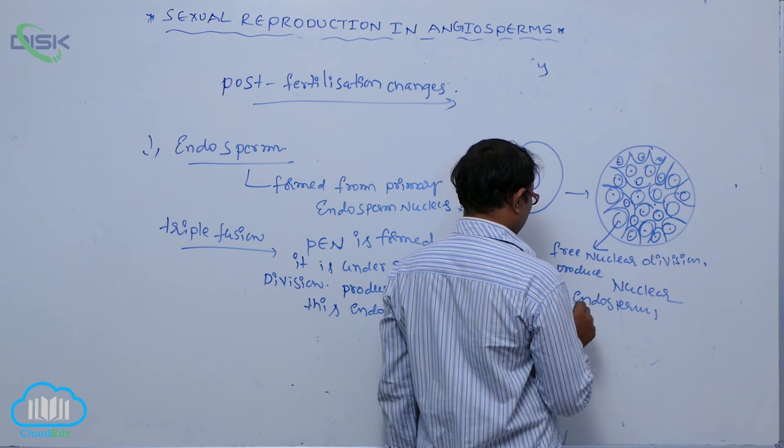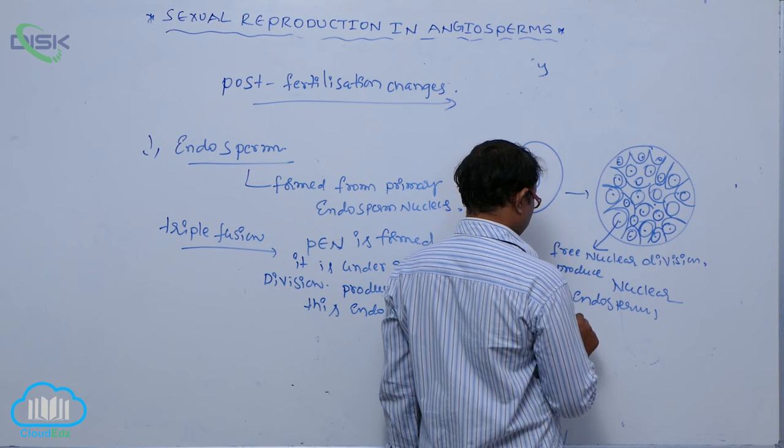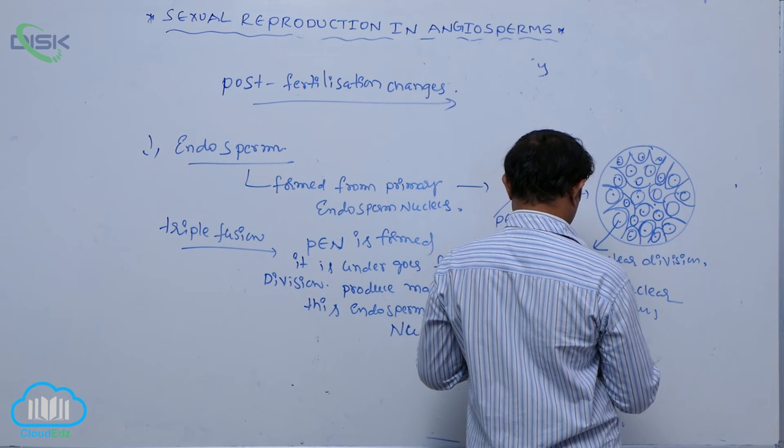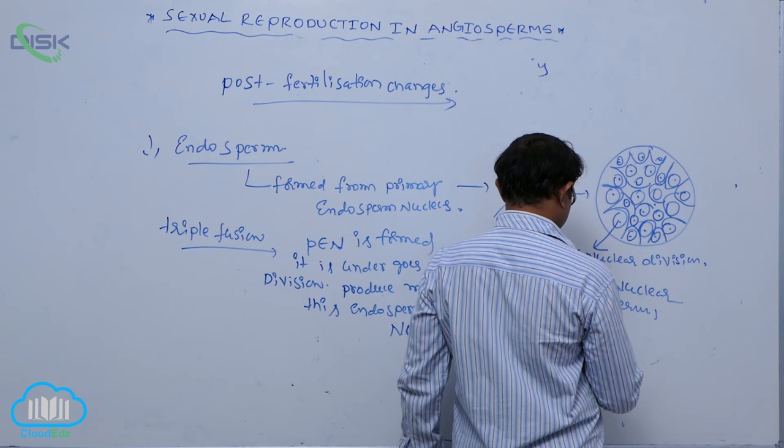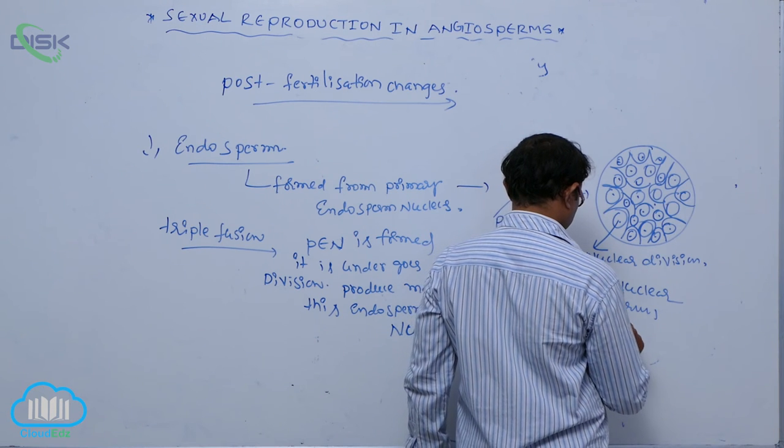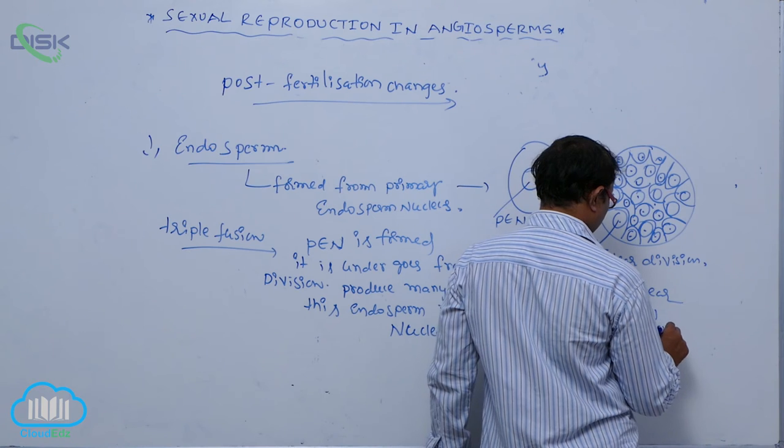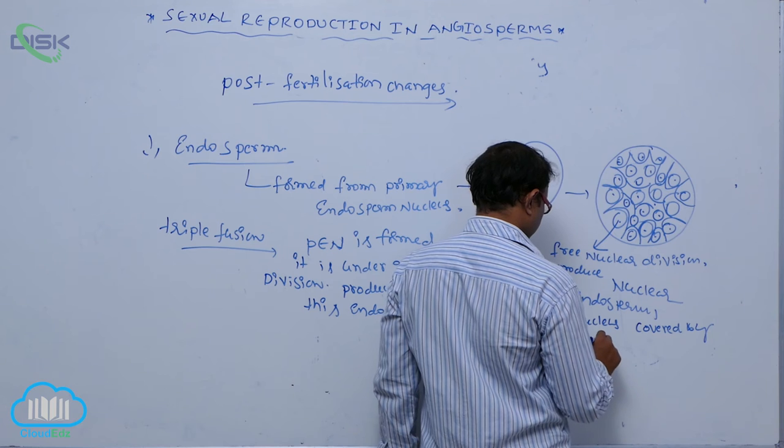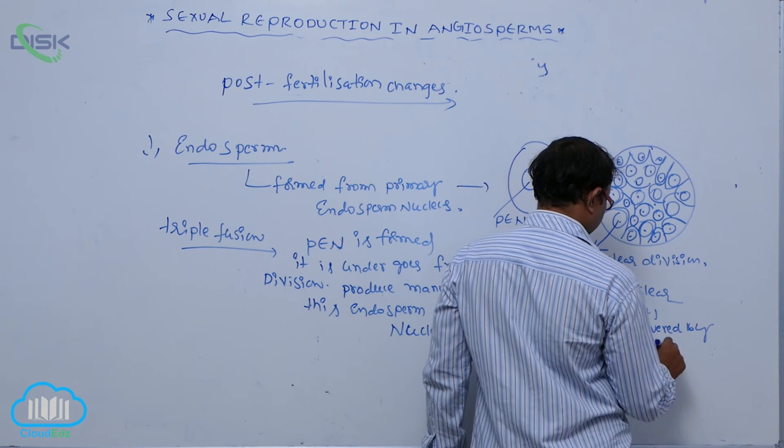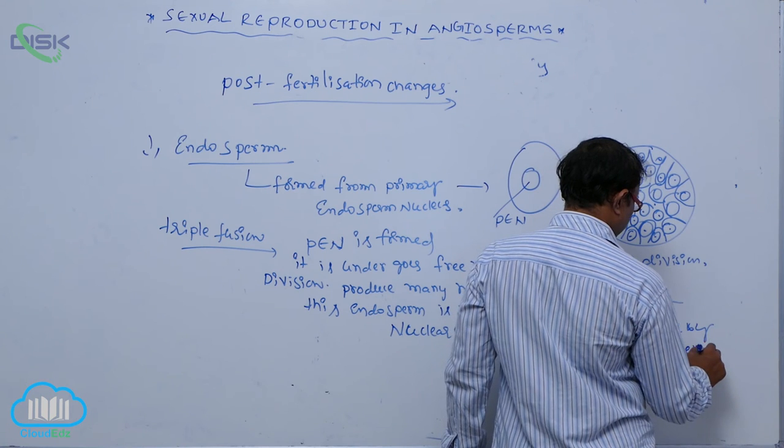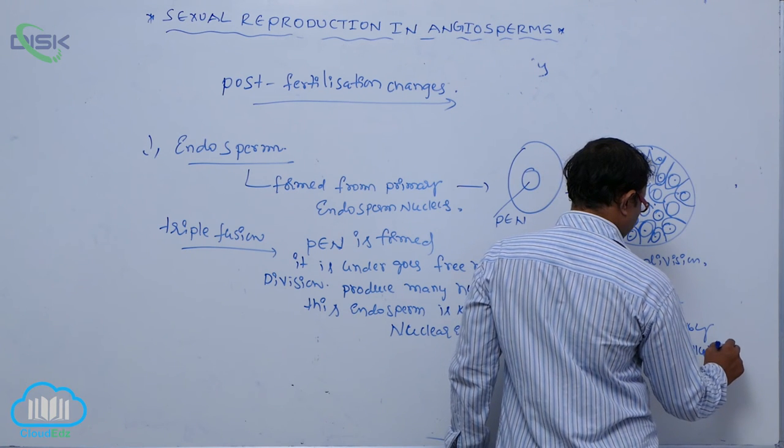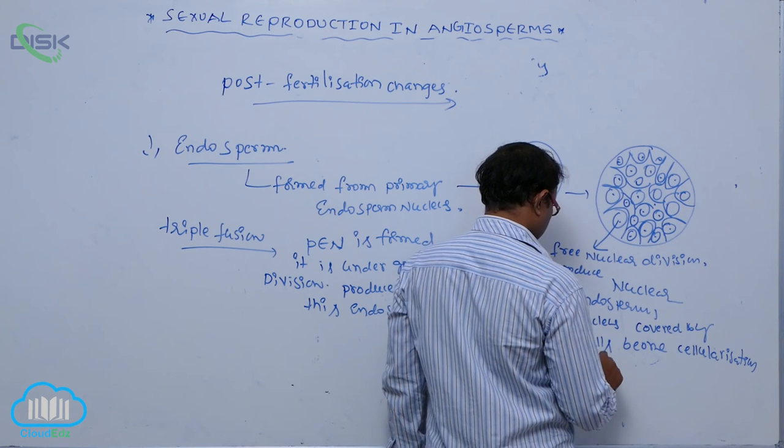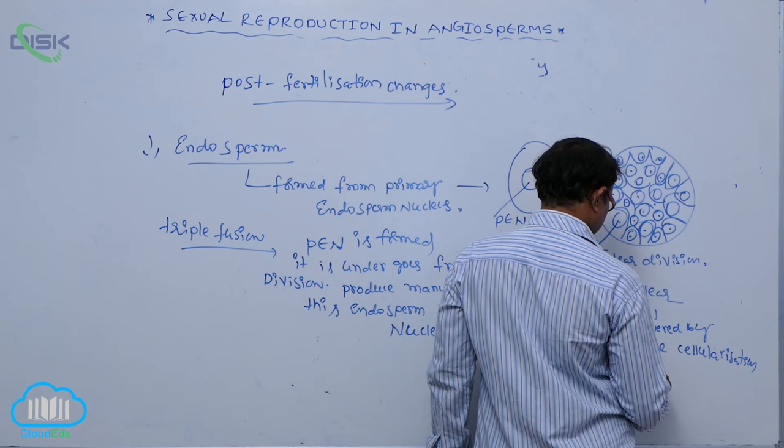And that is known as cellular endosperm. All nucleus covered by cell wall become cellularization. This process is known as cellularization to form the cellular endosperm.